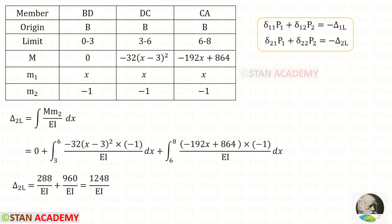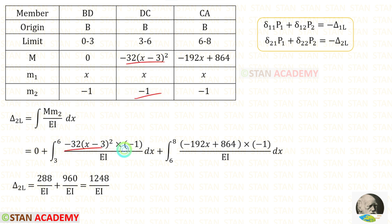Now let us find delta 2L using the formula: integration of M times M2 upon EI dx. Applying the values of M and M2, we get delta 2L = 1248 upon EI.